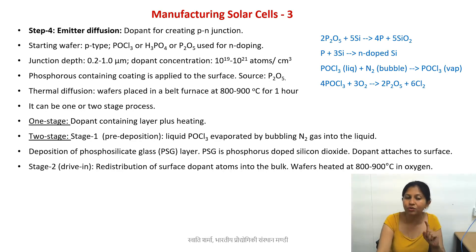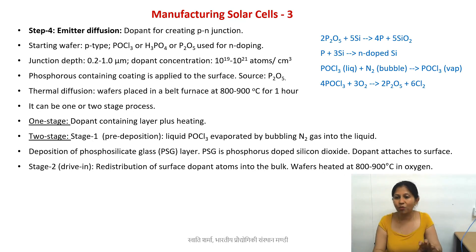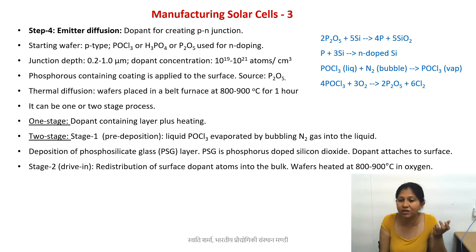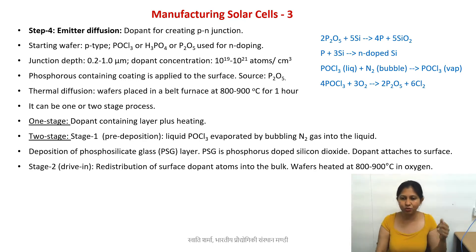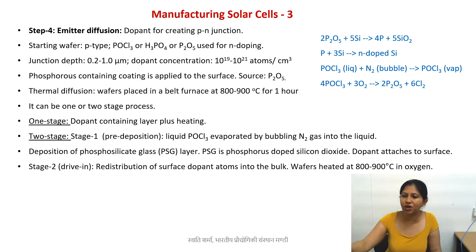Then you do the second step, which is the thermal diffusion — called the drive-in step. You increase the temperature in an oxygen environment, and the dopant on the surface redistributes into your silicon, going inside the material. In industrial processes you have a belt furnace: you put your silicon wafer onto a conveyor belt, it goes inside the heated chamber, stays there for about an hour, and then comes out. That is the drive-in process.